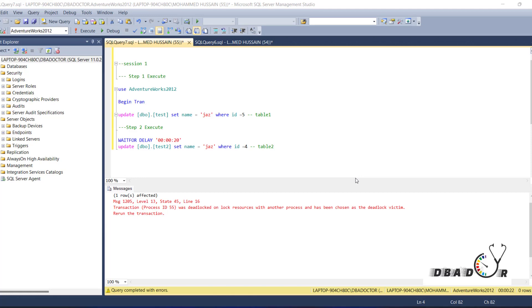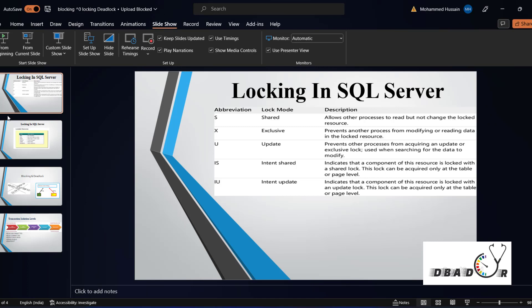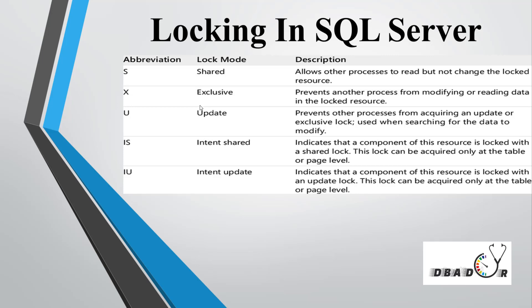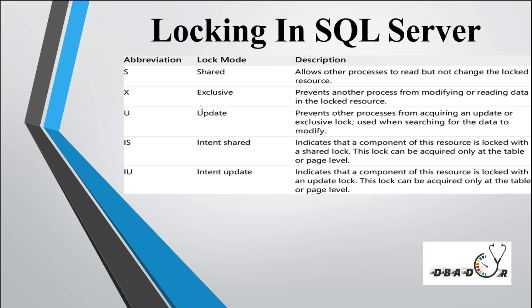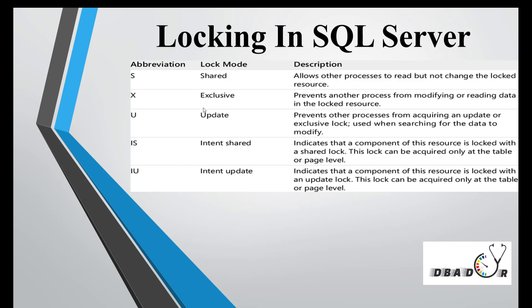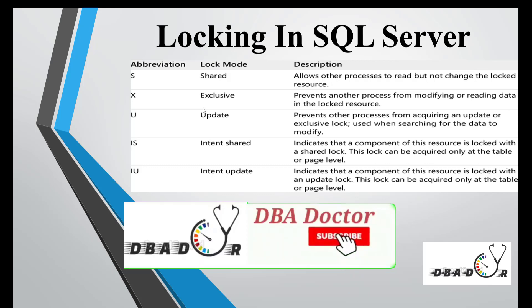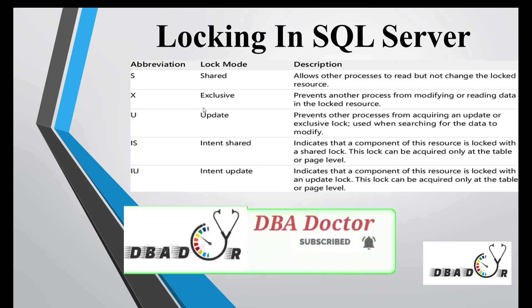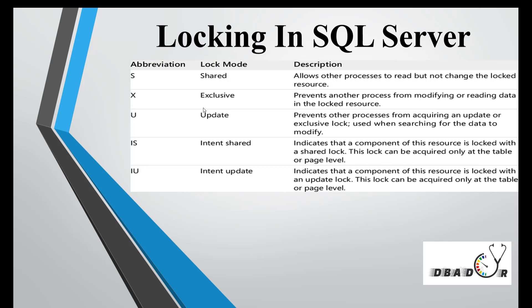Deadlocking happens when two sessions are interconnecting and taking the resource of a dependent session — that is when database locking happens. We will see one by one. SQL Server has introduced different kinds of locking, and the purpose of locking is to give you accurate database records so that data is not incorrect or inaccurate.